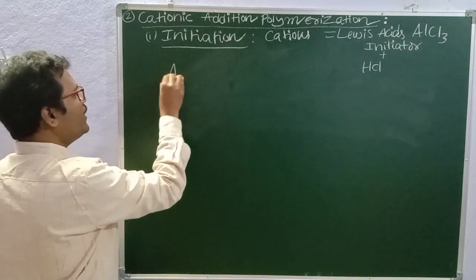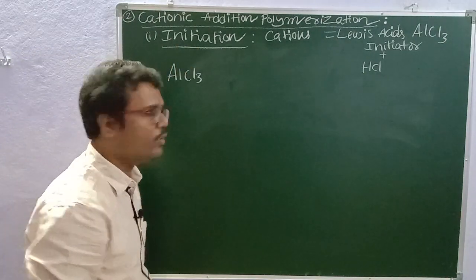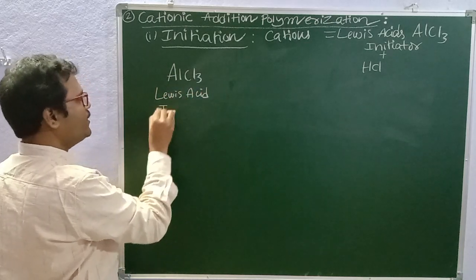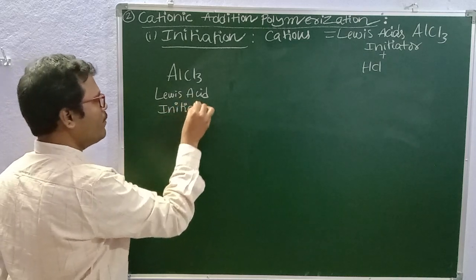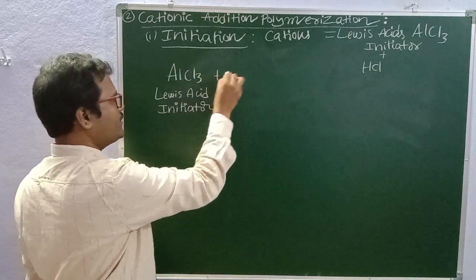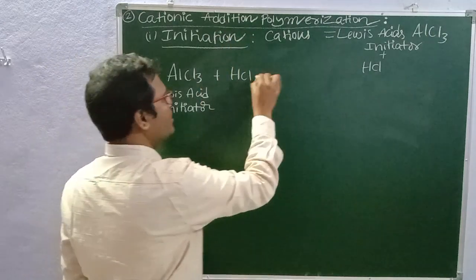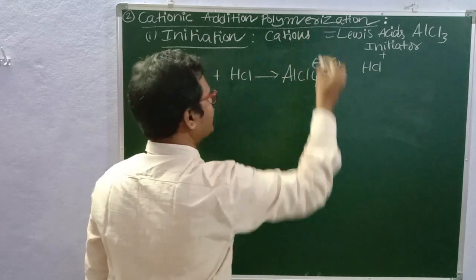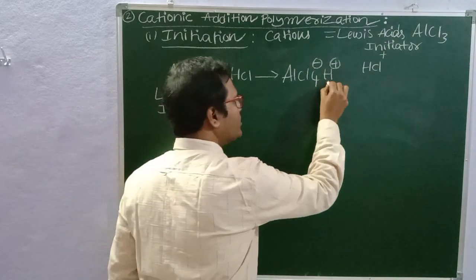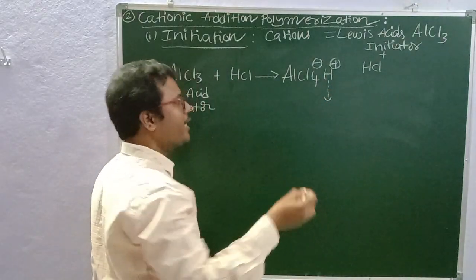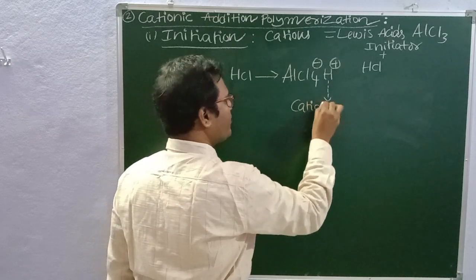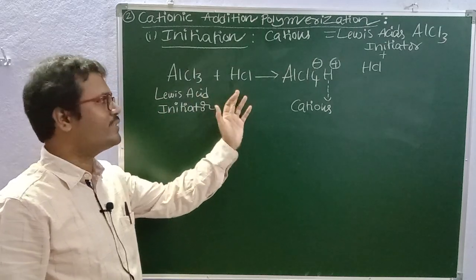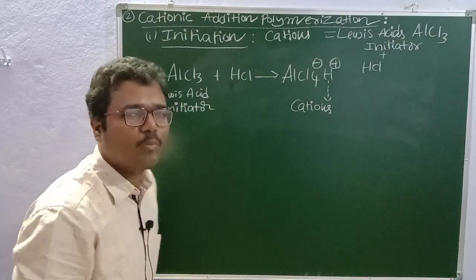That reaction is: AlCl3 (Lewis acid) plus HCl (hydrochloric acid) gives AlCl4⁻ and H⁺. Here we have positively charged H+ hydrogen ions. The cations produced from Lewis acid and hydrochloric acid will attack the monomer to give the monomer cation.